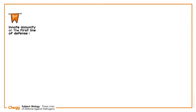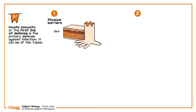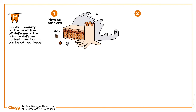Innate immunity, or the first line of defense, is the primary defense against infection. It can be of two types. Physical barriers are like protective walls around a city, preventing the invasion of enemies. Similarly, the human body has the skin that stops pathogens from invading the body. The internal protective barrier is the mucous membrane that restricts further invasion of a pathogen.